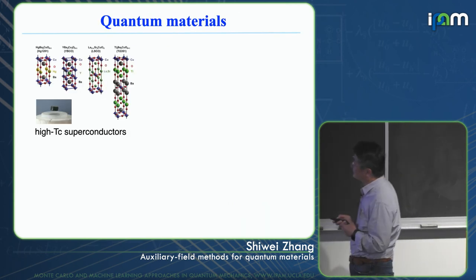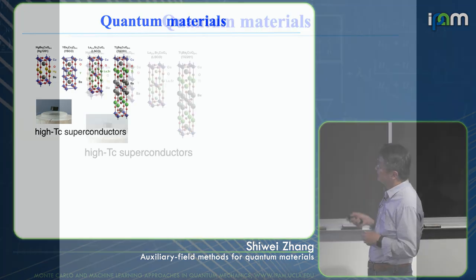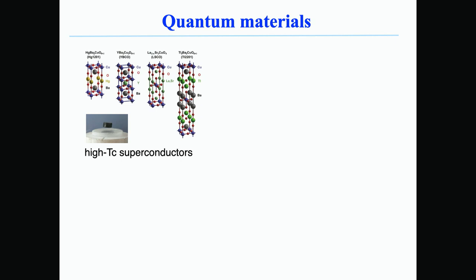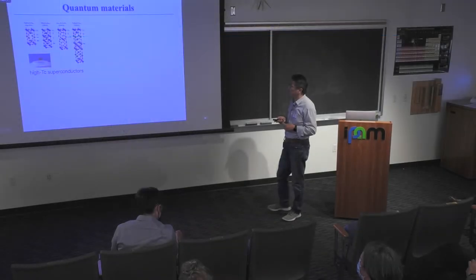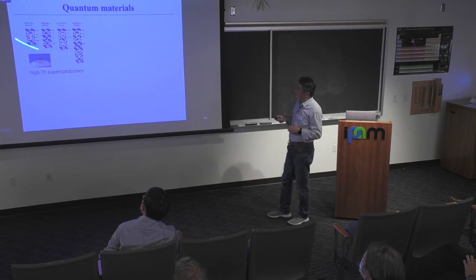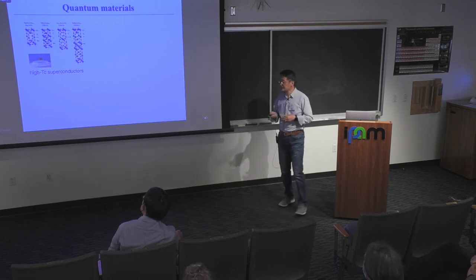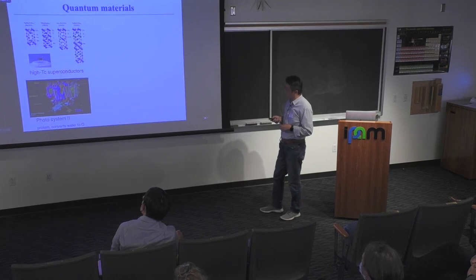Quantum materials — the many-electron problem. This is one representative problem that the condensed matter community has struggled with for over 30 years: high-Tc superconductors. These are materials with different complexity. The presence of transition metals within these structures conspires to make interesting physics. But the problem is quantum mechanical and complicated.